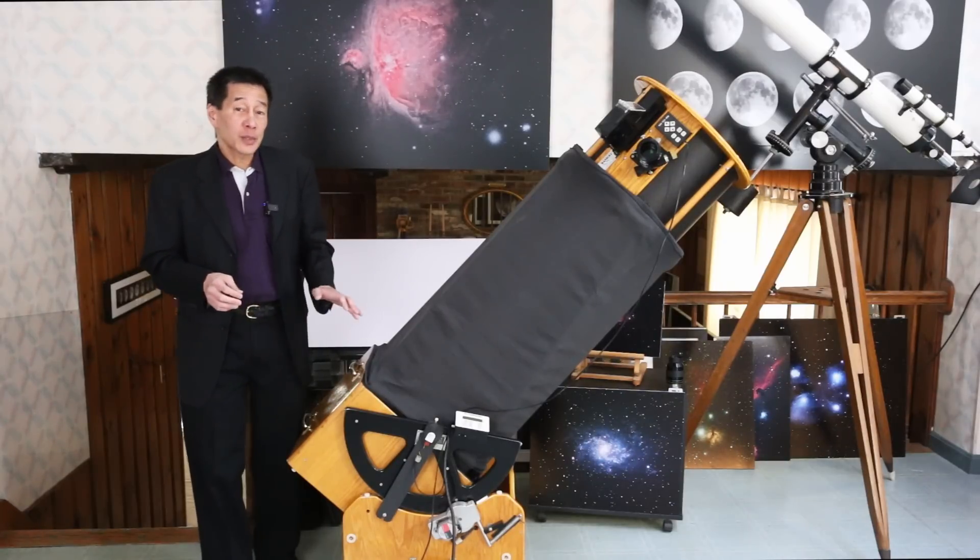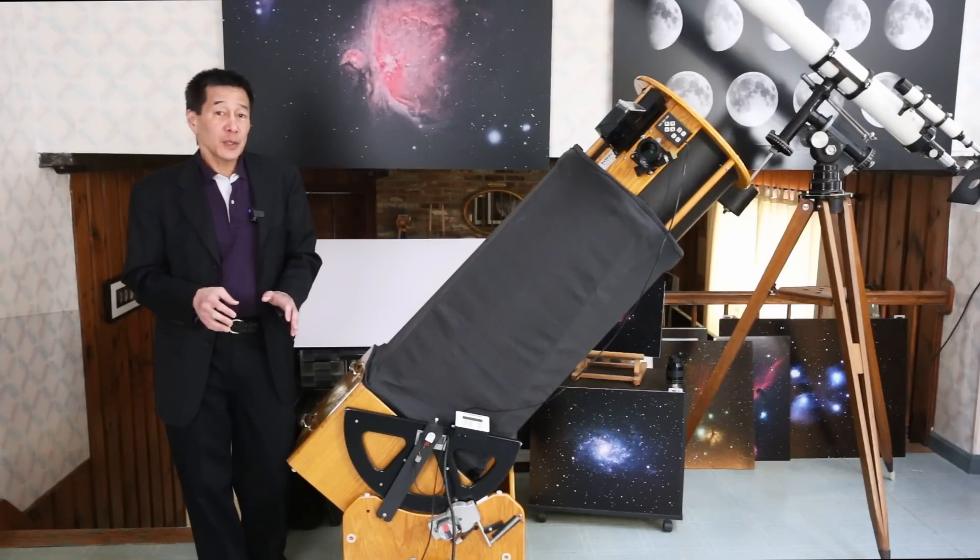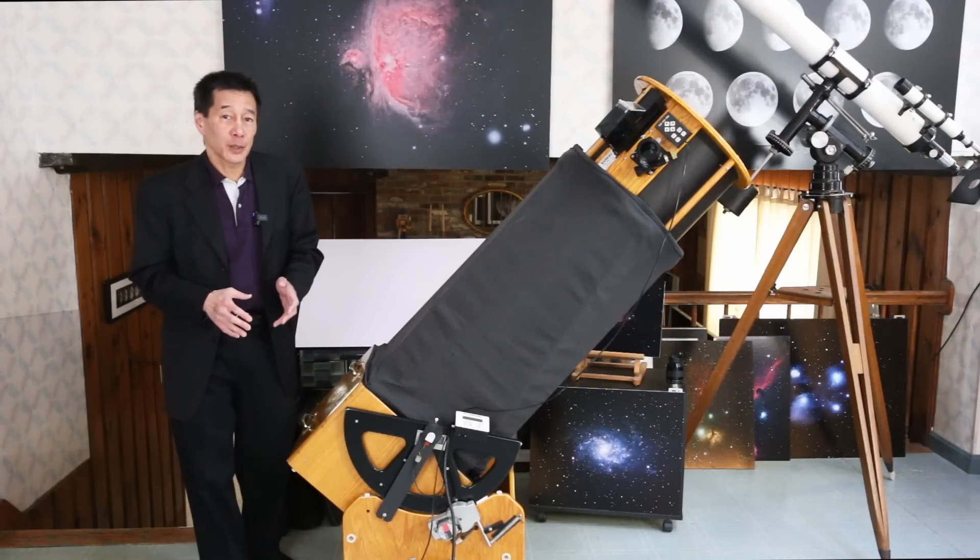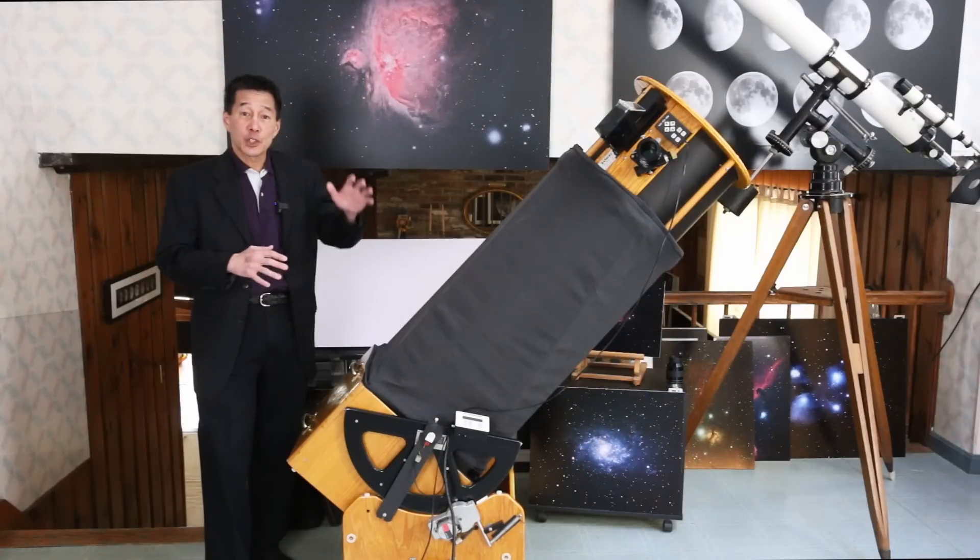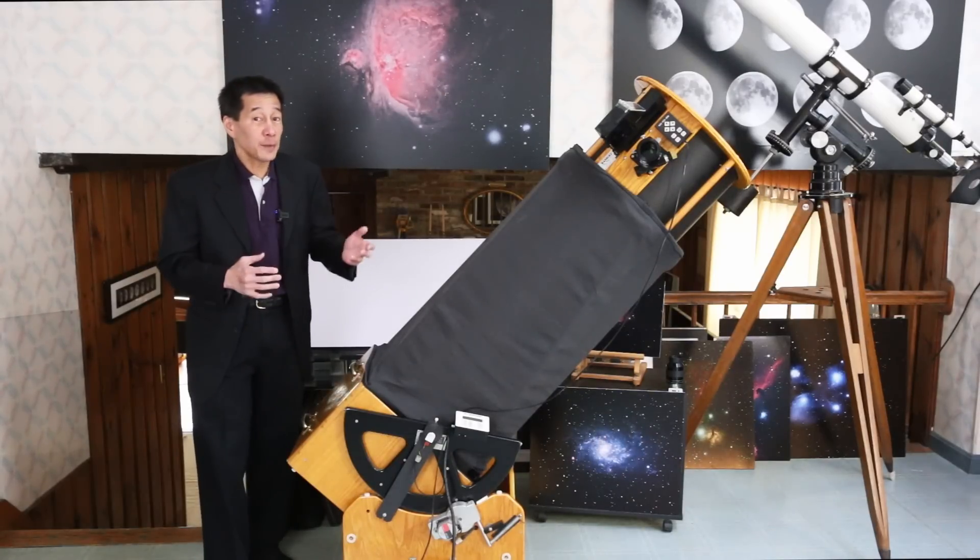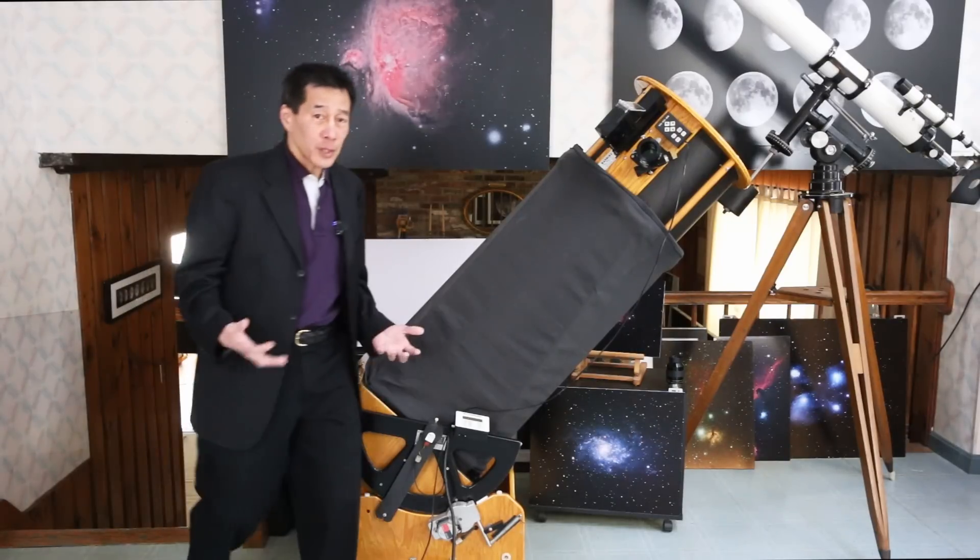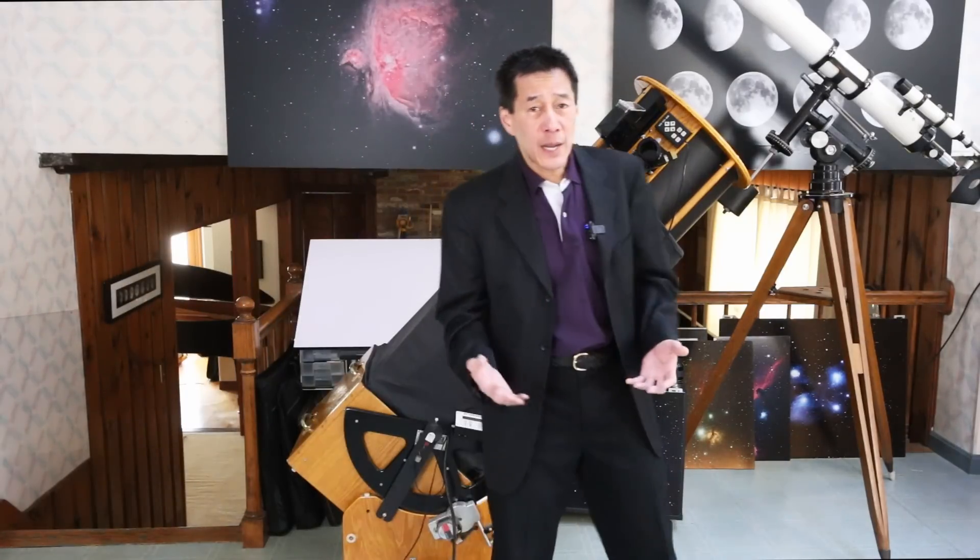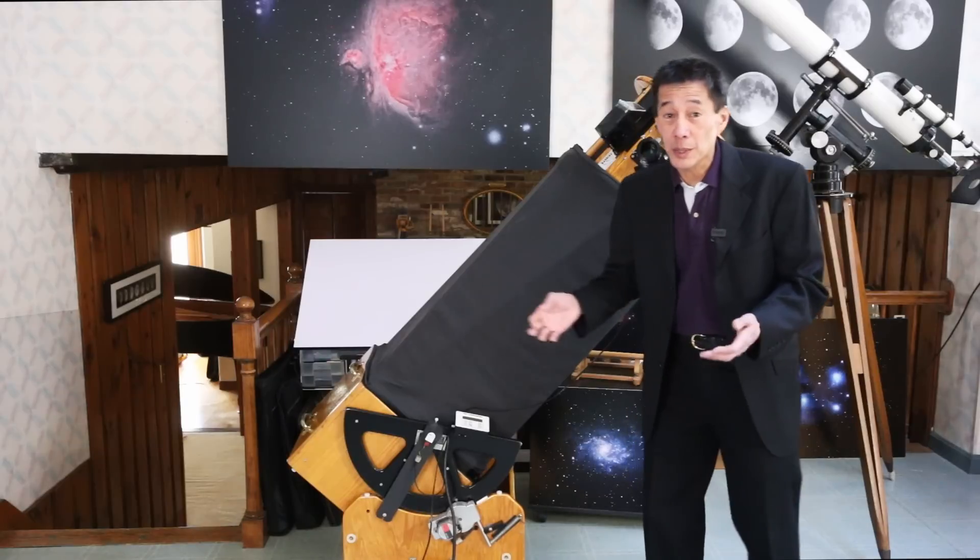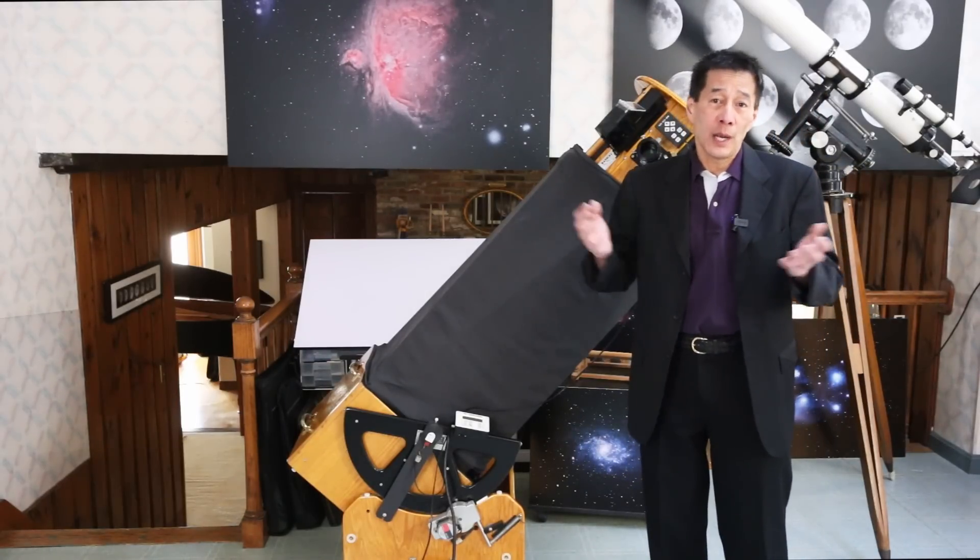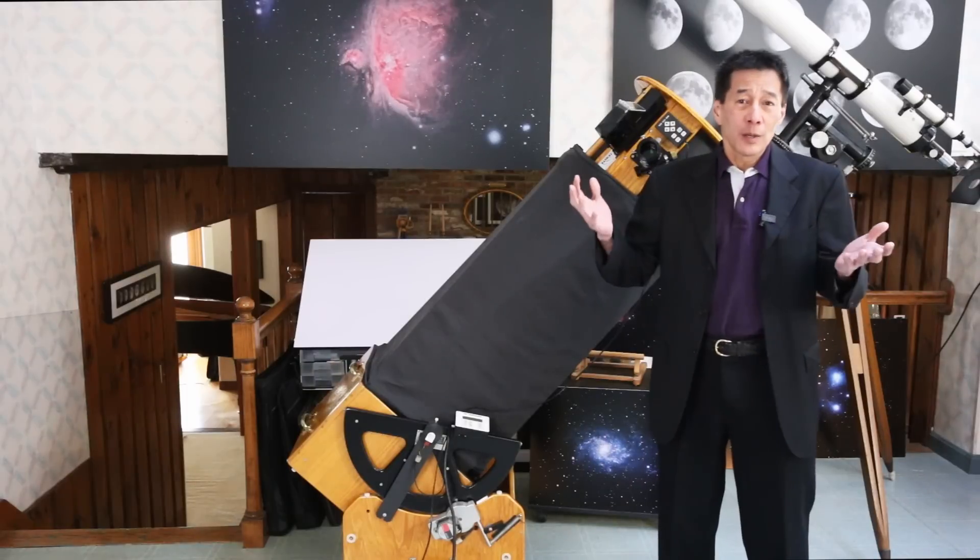Second thing is you'll notice the f-ratio on these Star Masters tends to be somewhat smaller than on some of the other premium Dob manufacturers. The reason for this is he wanted to make the telescope as short as possible so that you don't have to get on the step stool or the ladder in the first place. Now, one disadvantage of doing this is that any fast mirror, even one this good, is going to have some distortion at the edges. We call it coma or other aberrations, and they're unavoidable, really.